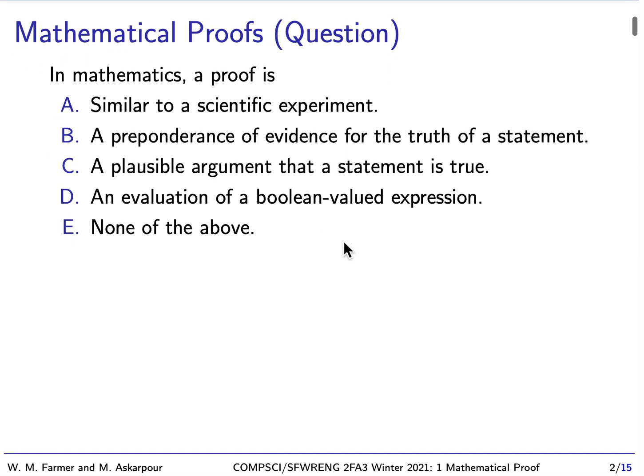Here's the question. In mathematics, a proof is — and there are five possible answers. A: a proof is similar to a scientific experiment. B: a preponderance of evidence for the truth of a statement. C: a plausible argument that a statement is true. D: an evaluation of a Boolean-valued expression. Or E: none of the above. Take a moment to think about this and come up with your own answer; you can stop the video now and reflect.